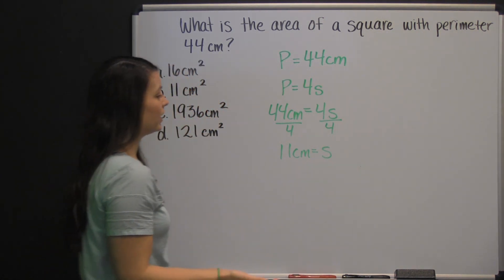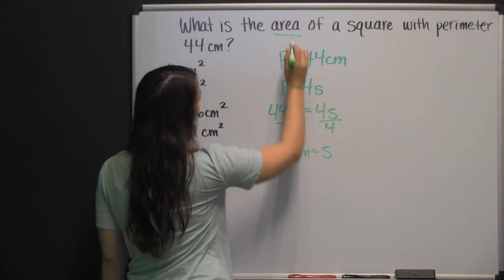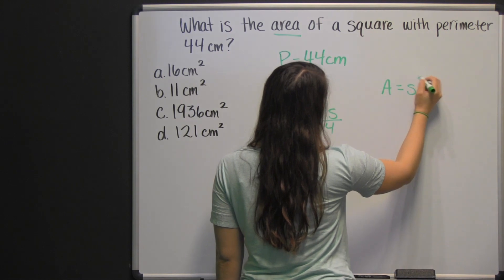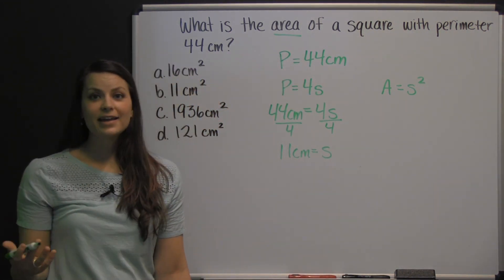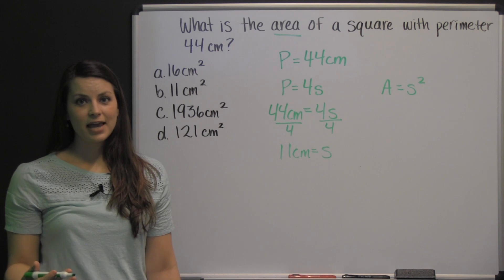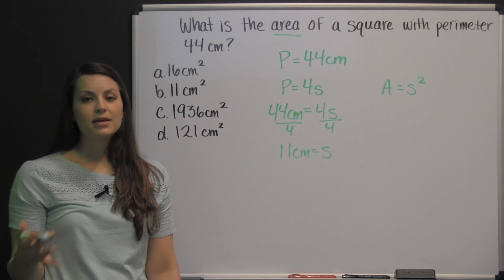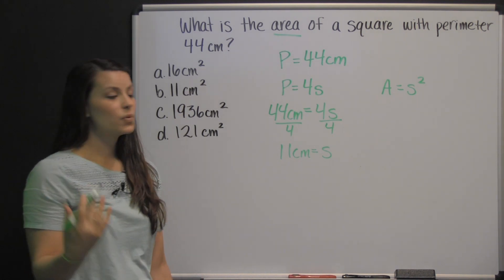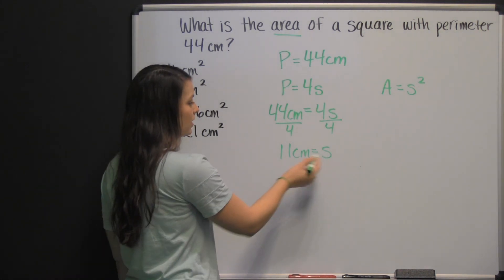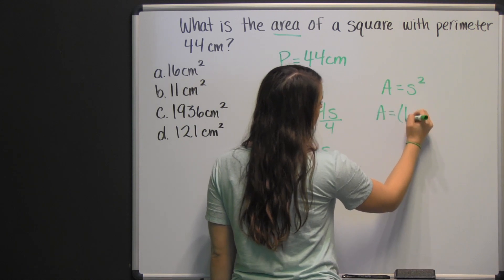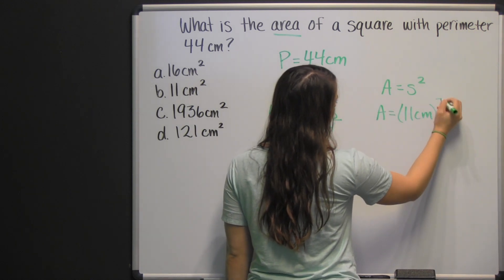Now that we know the length of each side, we can find the area of the square. The area of a square is side squared, because the lengths of the sides are the same. So instead of base times height or length times width, it's side times side, or side squared. The length of the side is 11 centimeters, so the area is 11 centimeters squared.